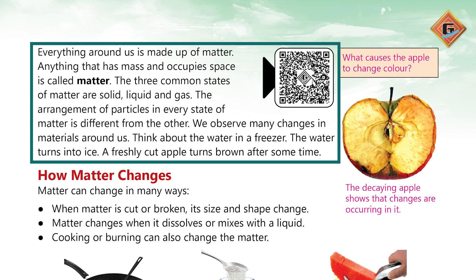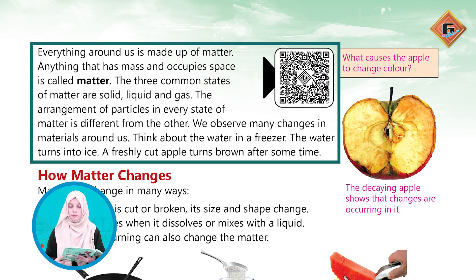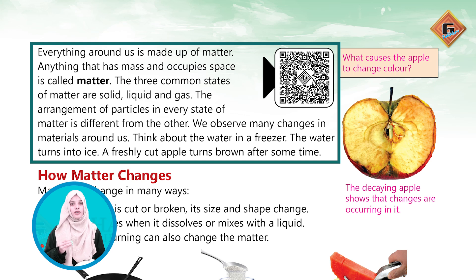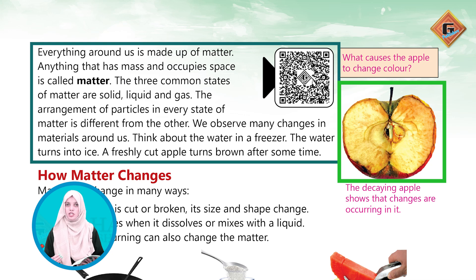ہم اپنے اردگرد موجود بہت ساری چیزوں میں changes observe کرتے ہیں۔ Think about the water in a freezer — the water turns into ice. The freshly cut apple turns brown after some time. اگر ہم پانی کو freezer میں رکھیں تو after few minutes وہ ice cubes میں convert ہو جاتا ہے، یعنی liquid solid میں convert ہوتا ہے۔ اسی طرح apple کو cut کر کے رکھیں تو after few minutes وہ brown ہونا start ہو جاتا ہے۔